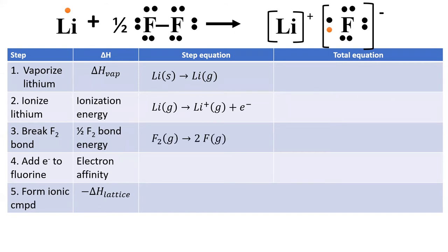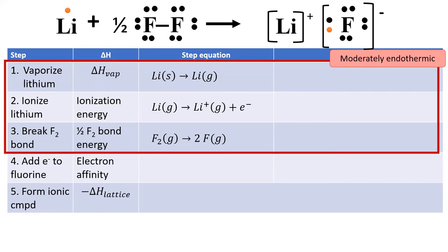Our next two steps involve fluorine. First, we have to break the covalent bond between the F2 molecule. This takes energy equal to half the F2 bond energy. Notice that each of these steps above takes energy. They're endothermic. It requires energy to vaporize lithium, it requires energy to ionize lithium, and it requires energy to break a covalent bond. These first three steps represent a sort of investment of energy, which we hope pays off in the last two steps.